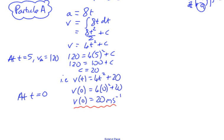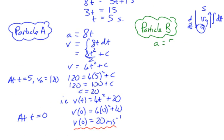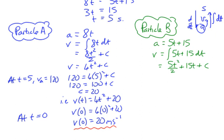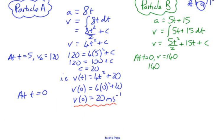We can apply the same principle for particle B. The acceleration is 5t plus 15, and again we integrate to get the velocity function with respect to t. That gives us 5t squared over 2, plus 15t, plus c. At the collision, t equals five and the velocity is 140 meters per second.